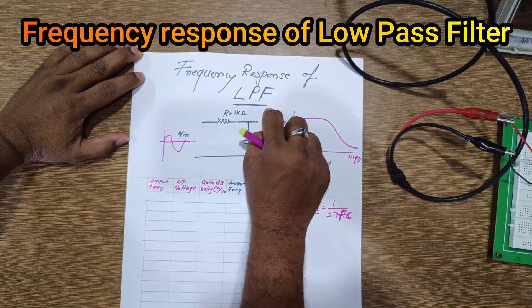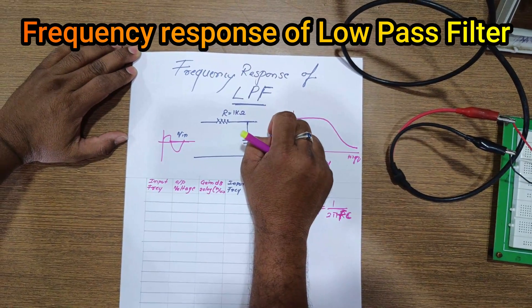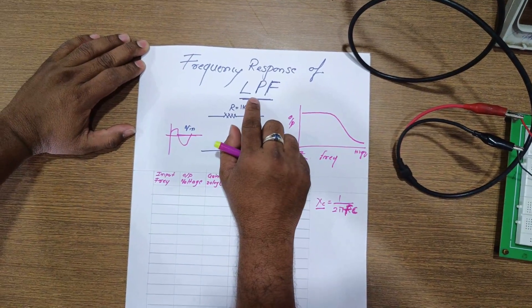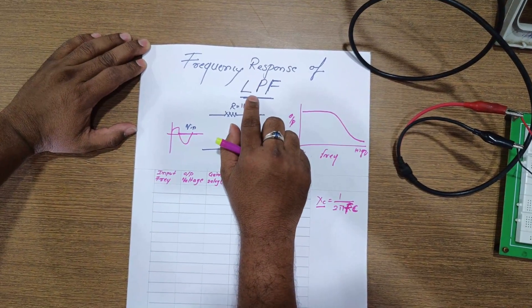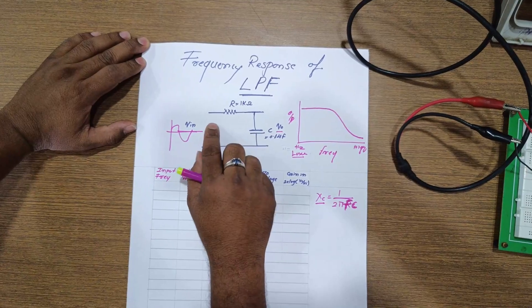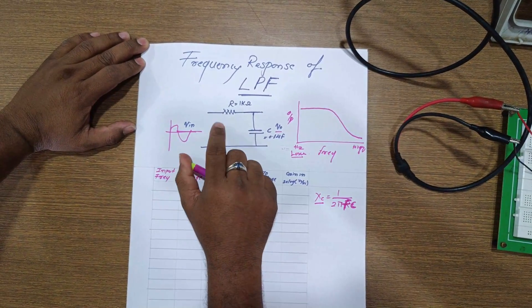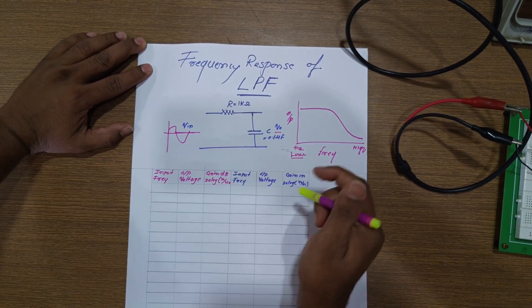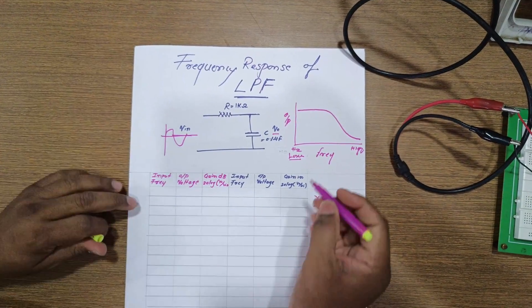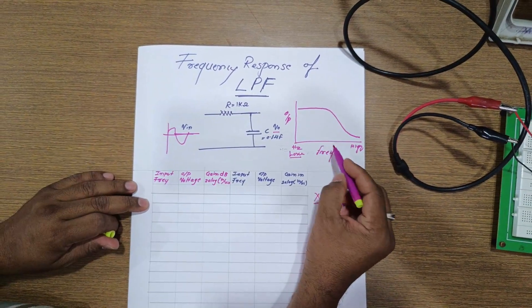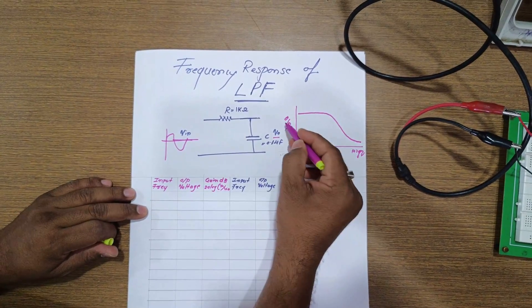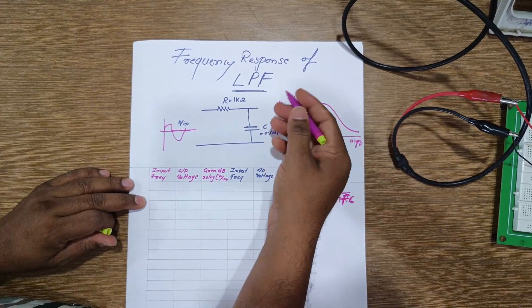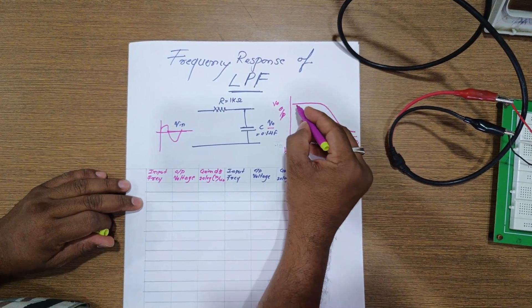From the name itself you can understand: low pass means low frequency is passed at the output and high frequencies are attenuated. This is a simple circuit of a low pass filter which consists of R and C. If you plot a graph at the output you can see frequency versus the output voltage — that is, 20 log of V-out upon V-in.